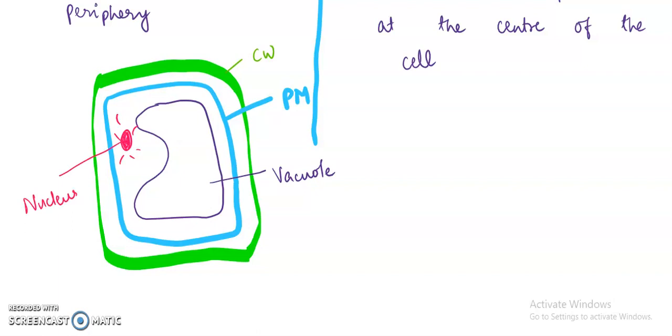And you can show plastids as well. So you can make the chloroplast here like this and make some coin like structure. It will be clear to the examiner that you have drawn. So this is chloroplast.